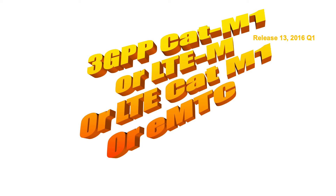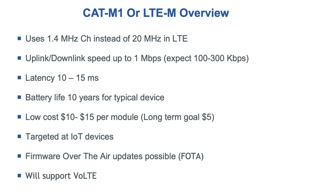Here's a quick overview of LTE-M or Cat M1. It uses just 1.4 MHz instead of the 20 MHz that LTE normally uses. Its uplink and downlink speed can be approximately 1 Mbps, but expect typical throughputs of between 100 to 300 kbps. Latency is around 10 to 15 milliseconds, and battery life for devices is typically around 10 years. Devices are designed to be low cost — today around $10 to $15, with a long-term goal of reaching approximately $5.